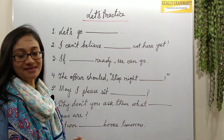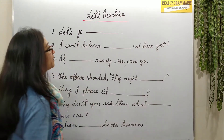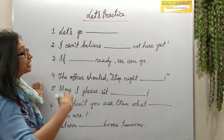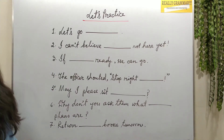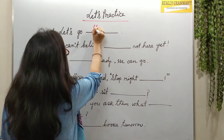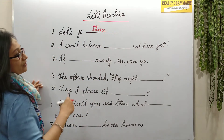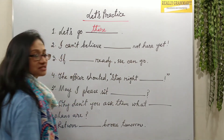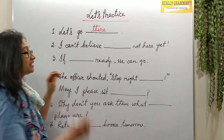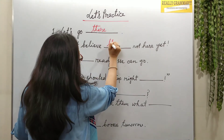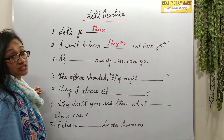Now it's the practice session. 'Let's go blank' — they're talking about a place, so it will be T-H-E-R-E: 'Let's go there.' Next: 'I can't believe blank not here yet' — they're talking about people, so it will be T-H-E-Y-apostrophe-R-E: 'I can't believe they're not here yet.'